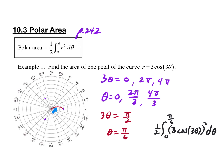This gives the area from the x-axis to the top of the curve for this half petal. Multiplying by two gives the entire petal, since both halves are equal. The two and the one-half cancel out, so it's essentially a matter of going to your graphing calculator, punching this in, and seeing what you get for the integral. We end up getting 2.356 square units.